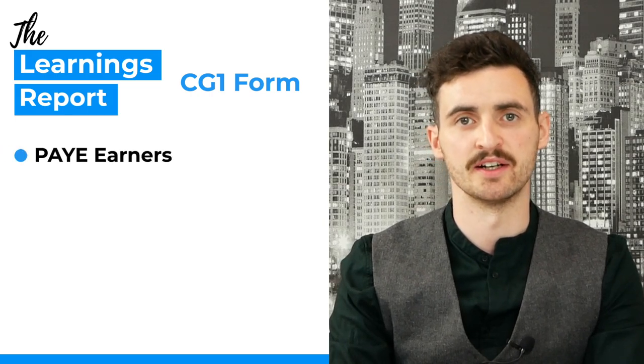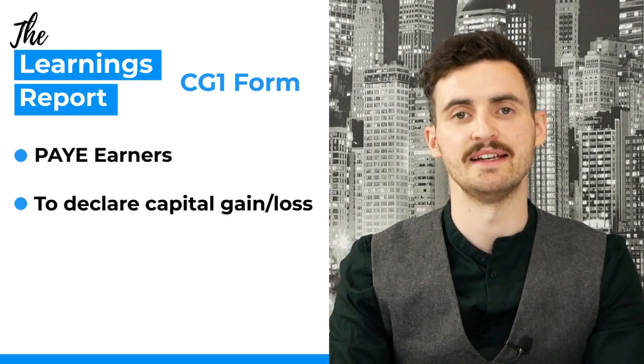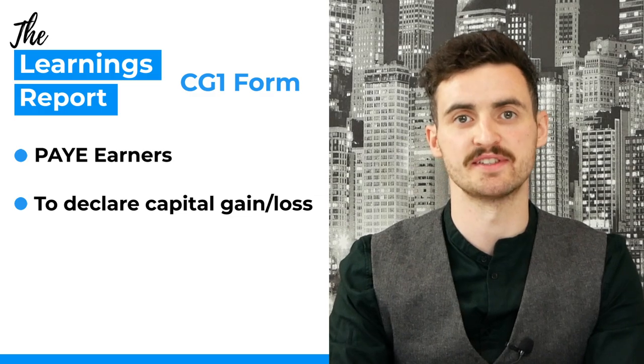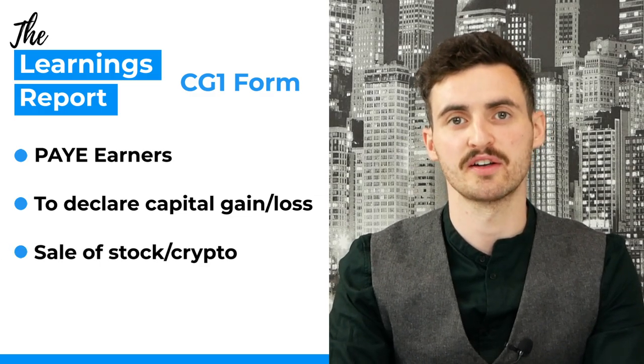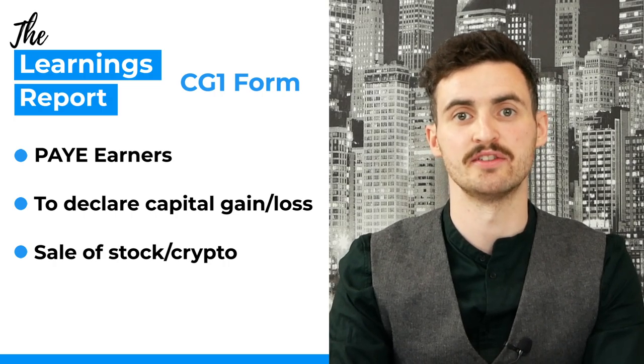Depending on which category you fall into from a tax standpoint, you'll likely need to file one or two of the three forms mentioned. The CG1 form is for PAYE earners — people who have a job — who wish to declare any capital gains or losses generated during the year. Generally this is from the sale of stocks or crypto, and is charged at a capital gains tax rate of 33%.